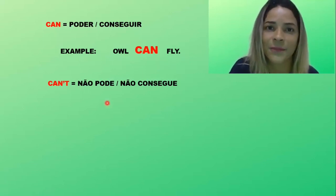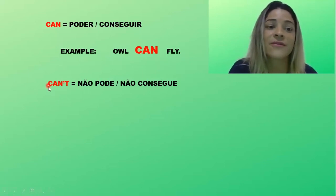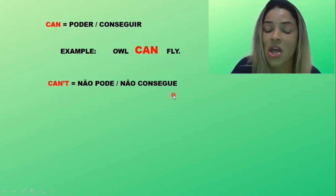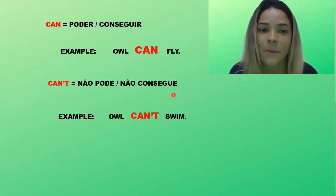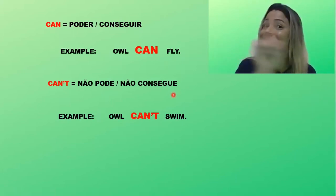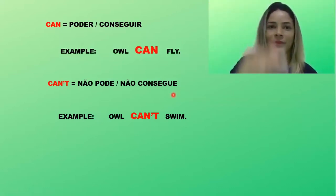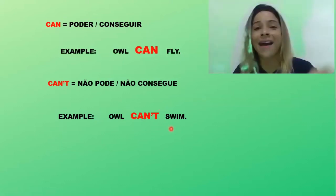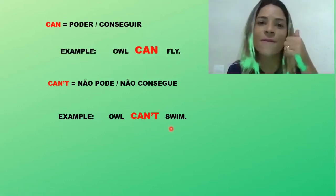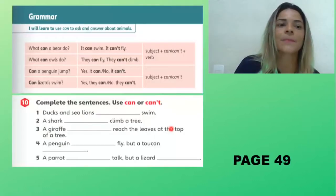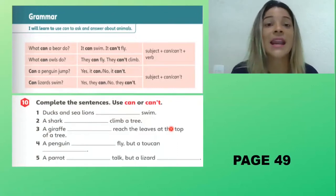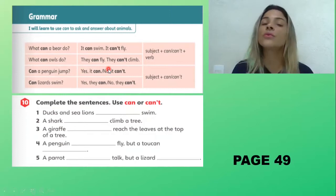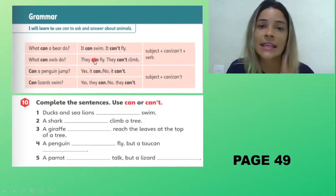And negative — a negativa vai ser 'can't': não pode, não consegue. Look at this example: 'Owl can't swim.' Coruja não pode, não consegue nadar. Very good! Now guys, let's read the other examples — these sentences in this chart. Agora vamos ler outros exemplos, essas frases aqui nesse quadro. Please open your book, page 49.